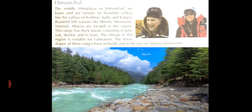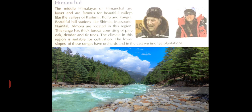Now we will discuss the second Himalayan range, that is Himanchal. The middle Himalayas or Himanchal are lower and are famous for beautiful valleys like the valley of Kashmir, Kullu and Kangra. Beautiful hill stations like Shimla, Mussoorie and Nainital are located in this region.